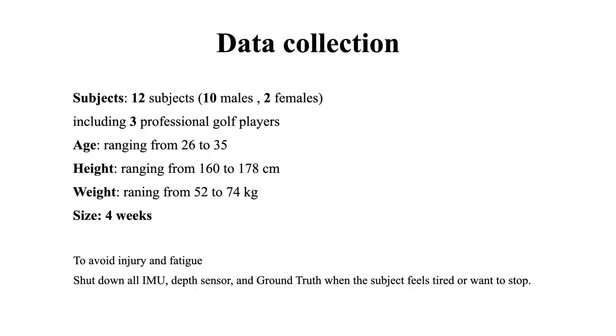The ground truth OptiTrack consists of multiple high-precision and high-speed cameras. In the data collection, we recruited 12 subjects, including 10 males and 2 females. Among them, there are three professional golf players. Their age ranges from 26 to 35, height from 160 to 178 cm, and weight from 52 to 74 kg. We collected our data over four weeks to avoid injury and fatigue. We shut down all the IMU, depth sensor, and ground truth when subjects felt tired or wanted to stop.